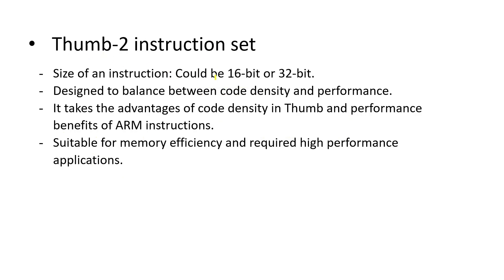Finally, let's explore the Thumb-2 instruction set. It combines 16-bit and 32-bit instructions — that means it combines the benefits of both the Thumb and ARM instruction sets. It is designed to balance code density and performance, taking the advantages of code density from the Thumb instruction set and the performance benefits of ARM instructions. It is suitable for applications that require both memory efficiency and high performance.